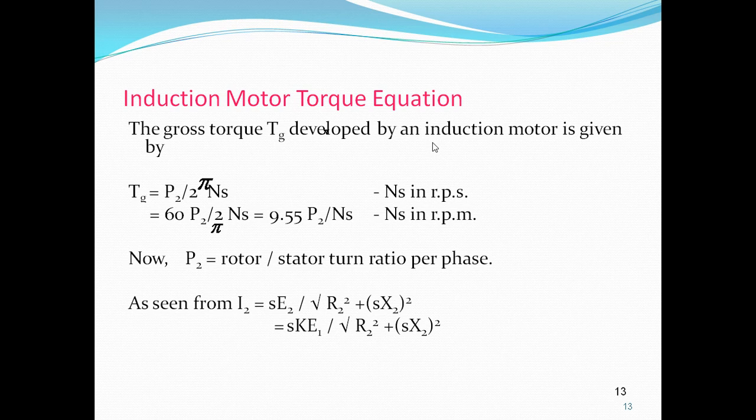As load increases, speed decreases, so slip and torque increase. The torque increases and reaches its maximum value when S = R2/X2. At this condition the torque available is called the maximum torque, measured torque, or breakdown torque, or pullout torque.